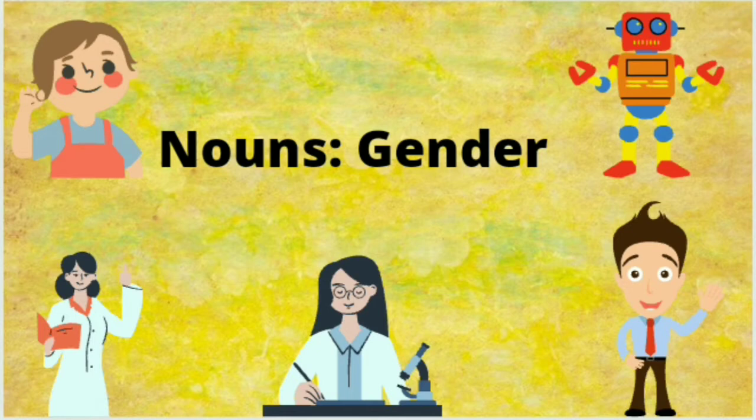We have already seen that nouns can be one or many. They can be countable or uncountable. And now today we will discuss gender in nouns. Let's begin.